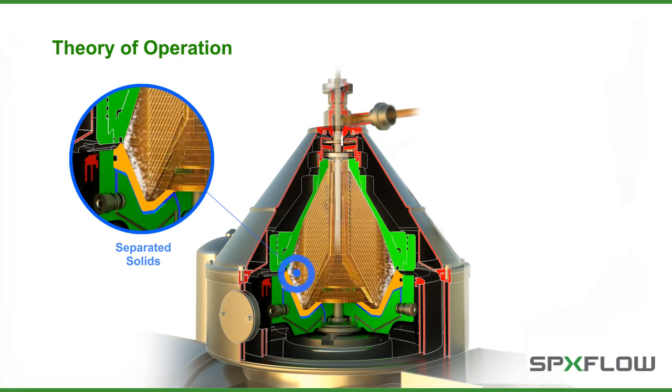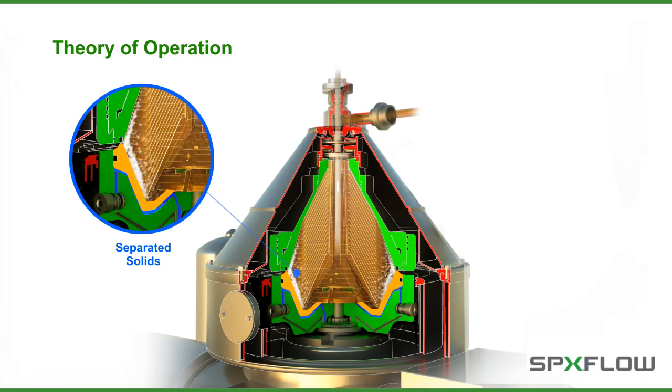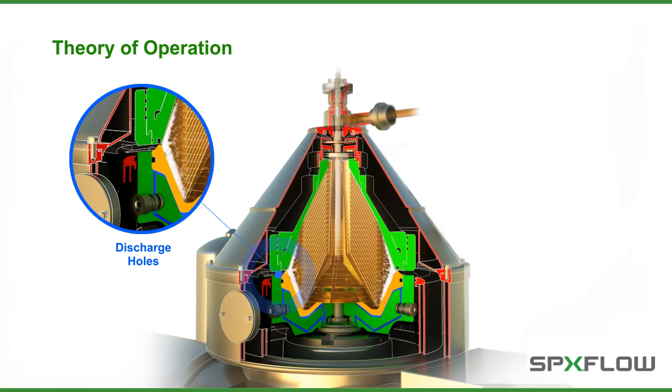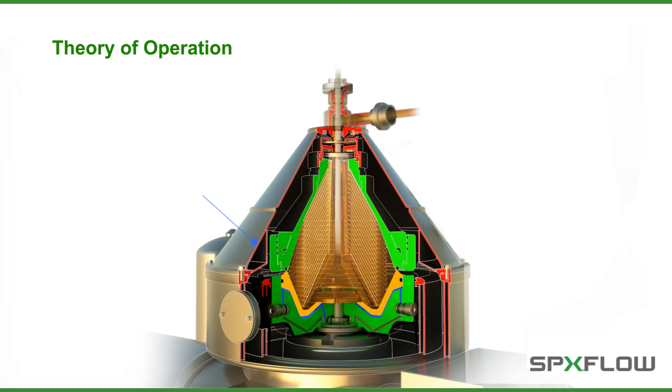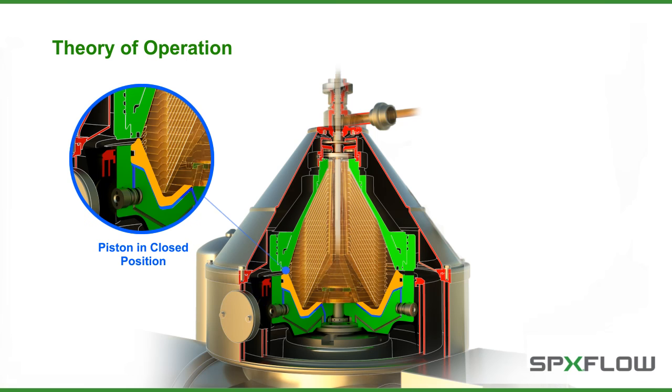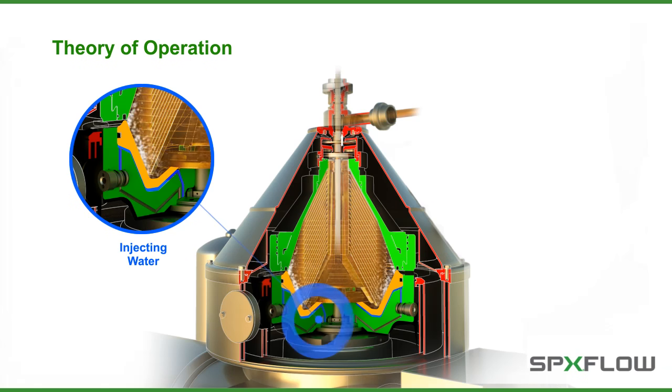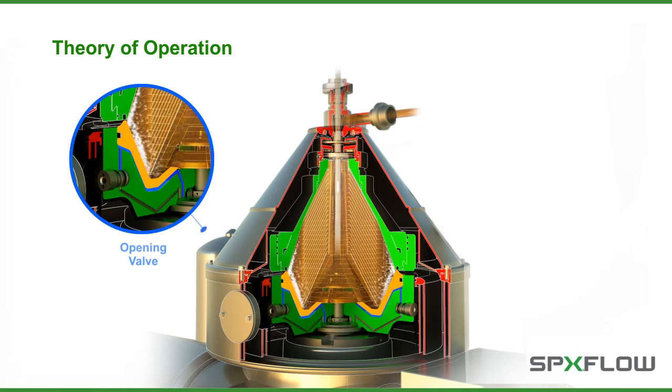The separated solids are collected in the peripheral part of the bowl and are periodically and automatically discharged through the discharge holes to maintain the required separation efficiency. The sliding piston is kept in the closed position by water pressure in the chamber.